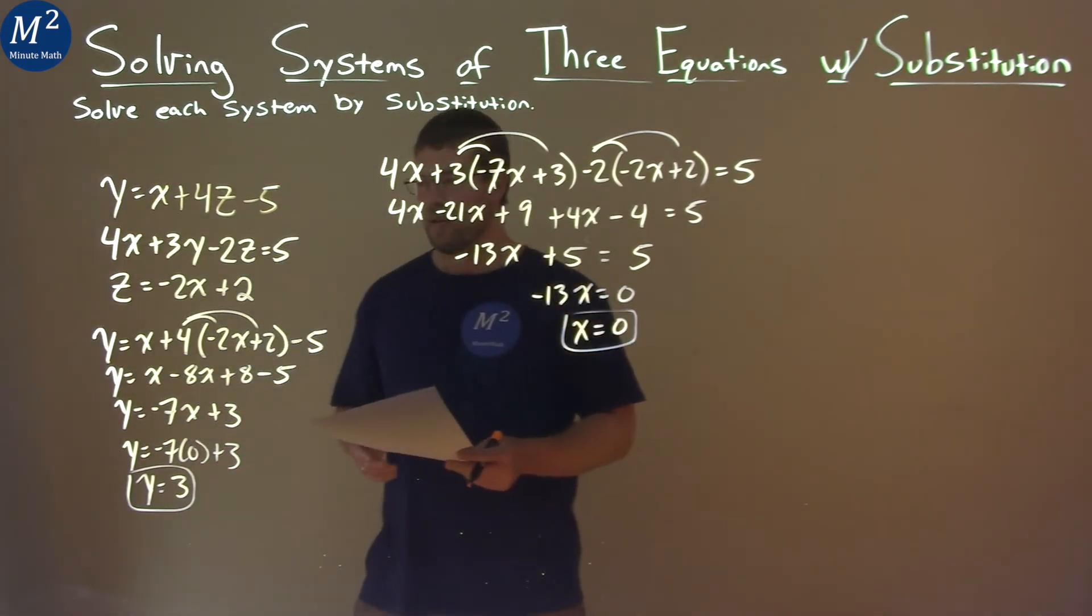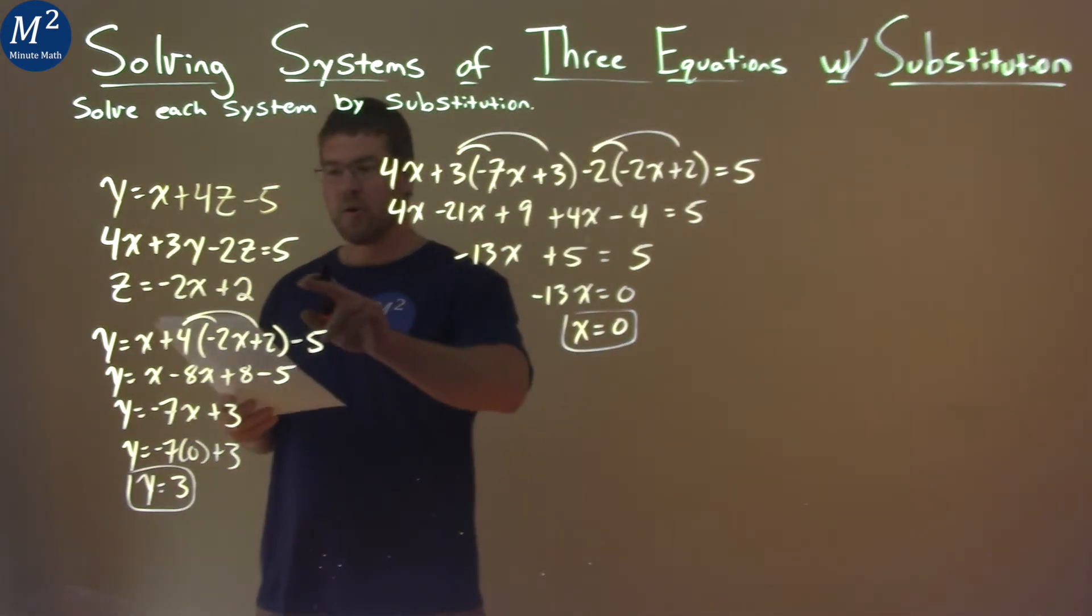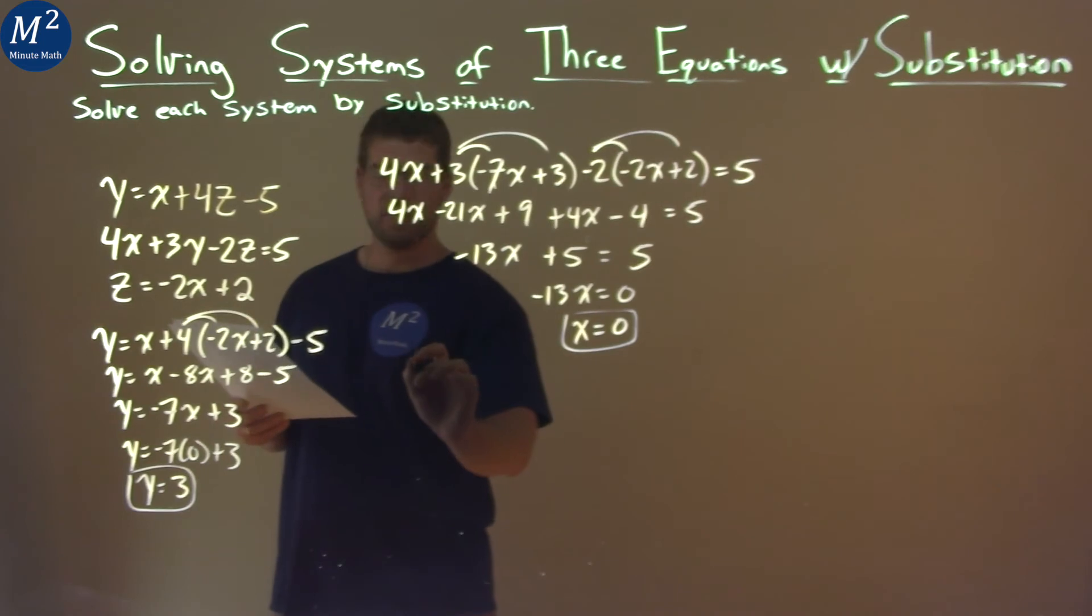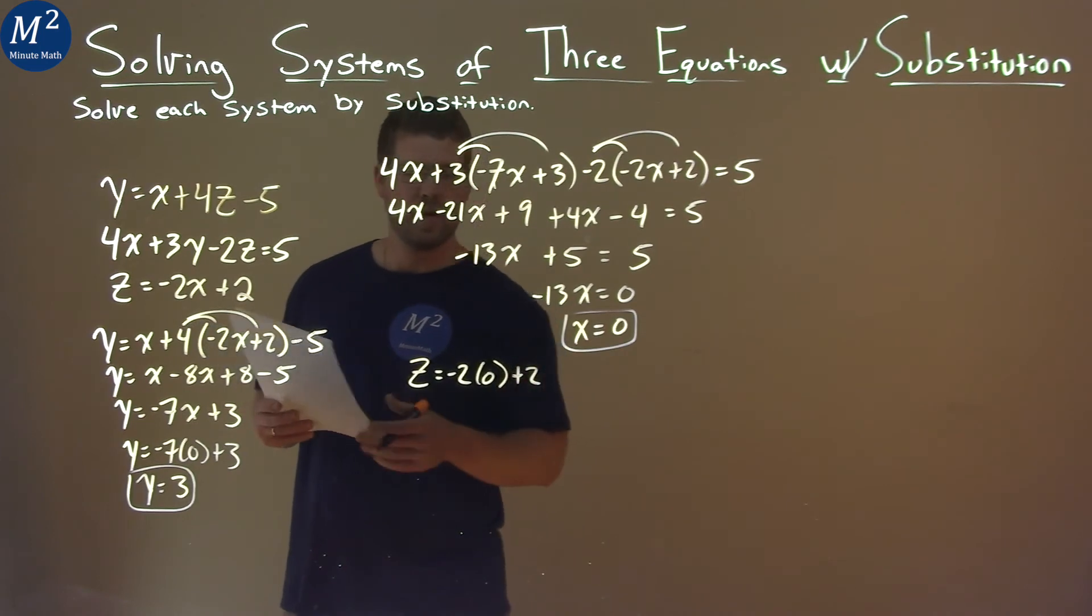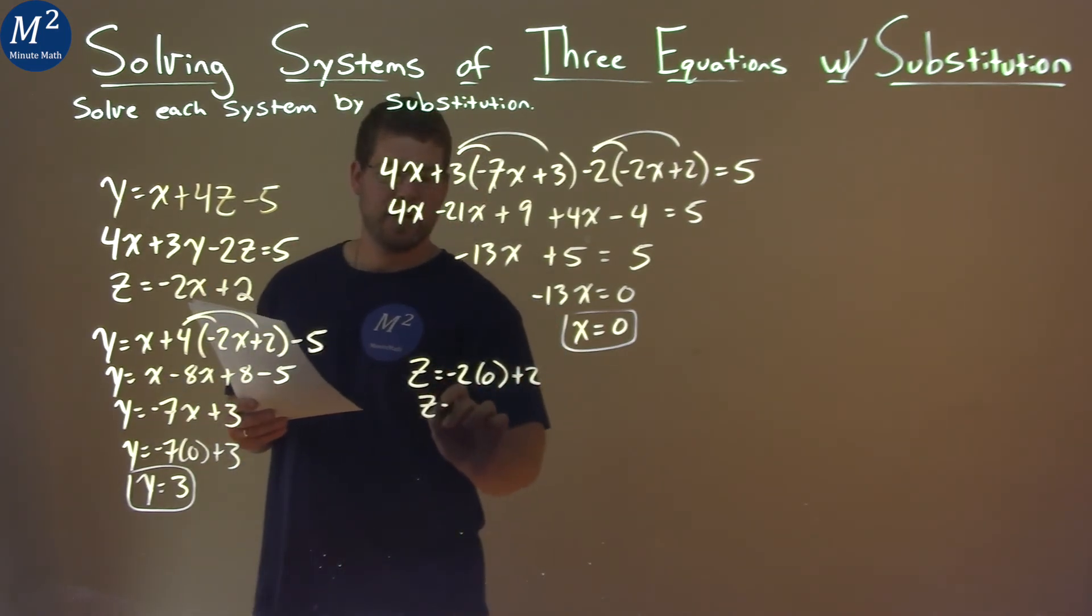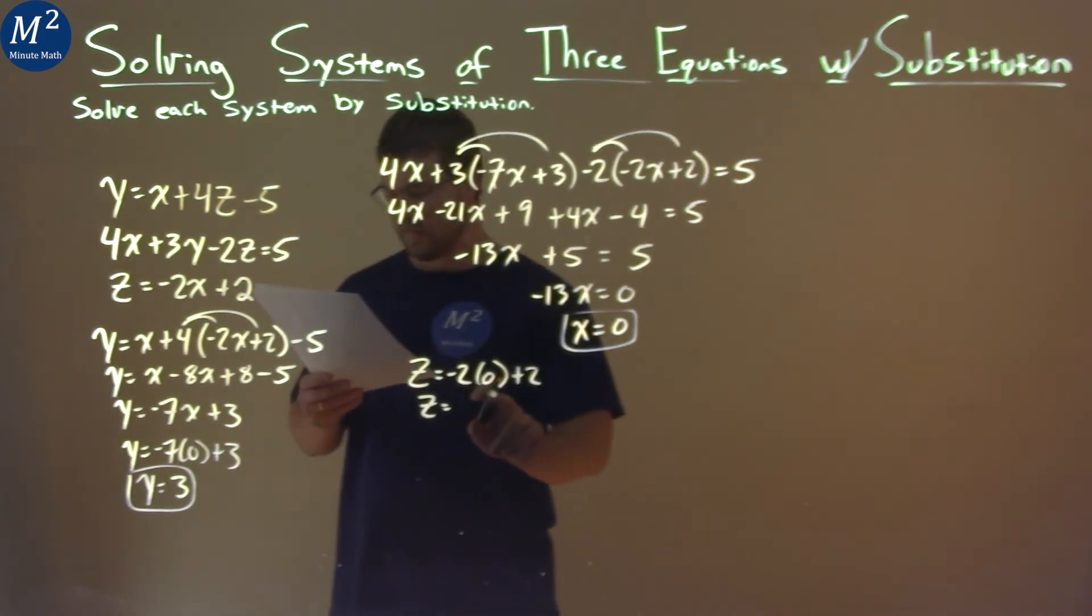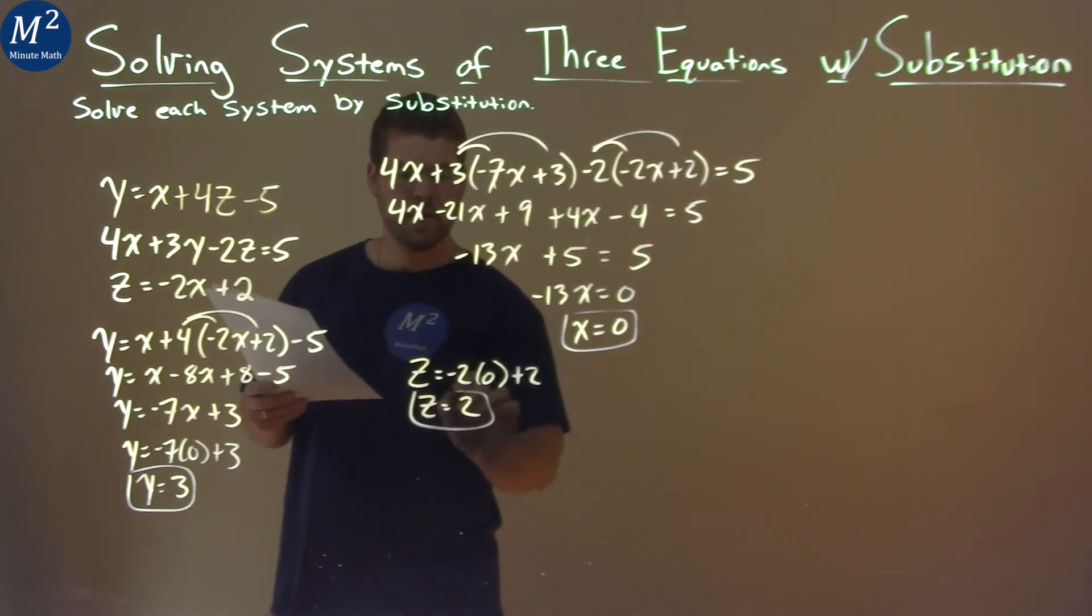Well, we have x, we have y, let's go find our z. Our equation for z they gave us was z = -2, and instead of x, let's put 0 ahead, 0 + 2. And well, this is easy now, -2 times 0 is 0, plus 2 is 2. So z = 2.